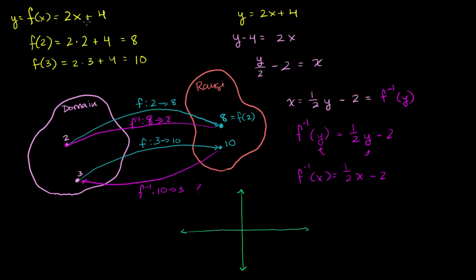This first function, 2x plus 4, its y-intercept is going to be 1, 2, 3, 4, just like that. And then its slope will look like this. It has a slope of 2. So it'll look something like, the graph will look, let me make it a little bit neater than that. It'll look something like that. That's what that function looks like.